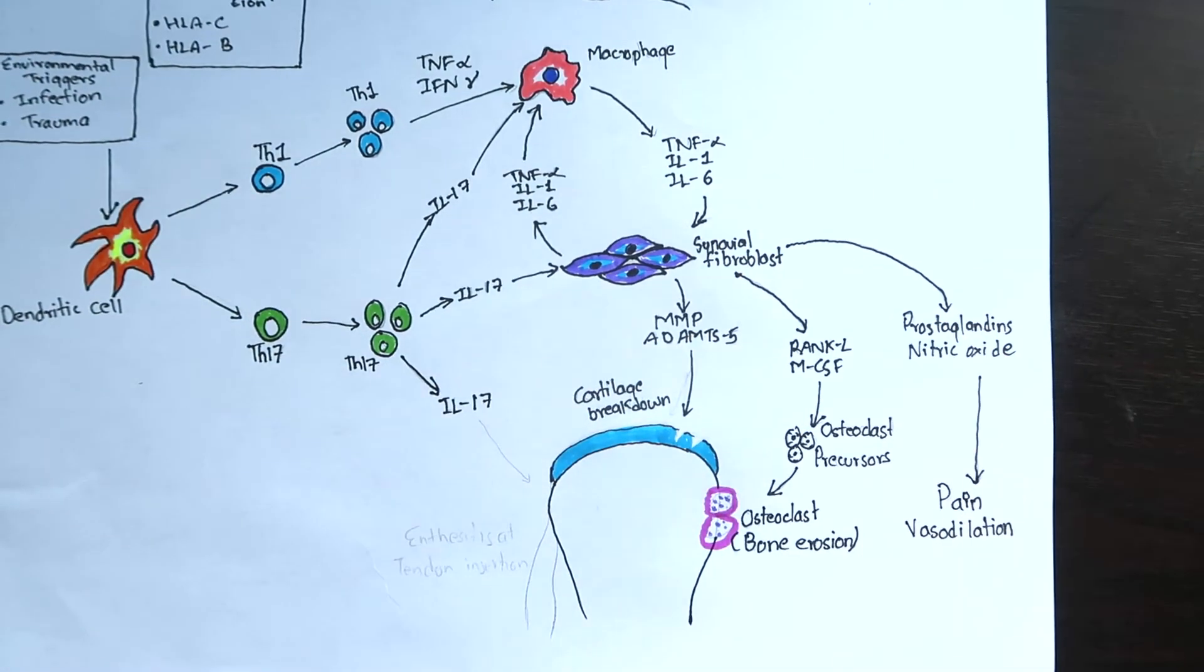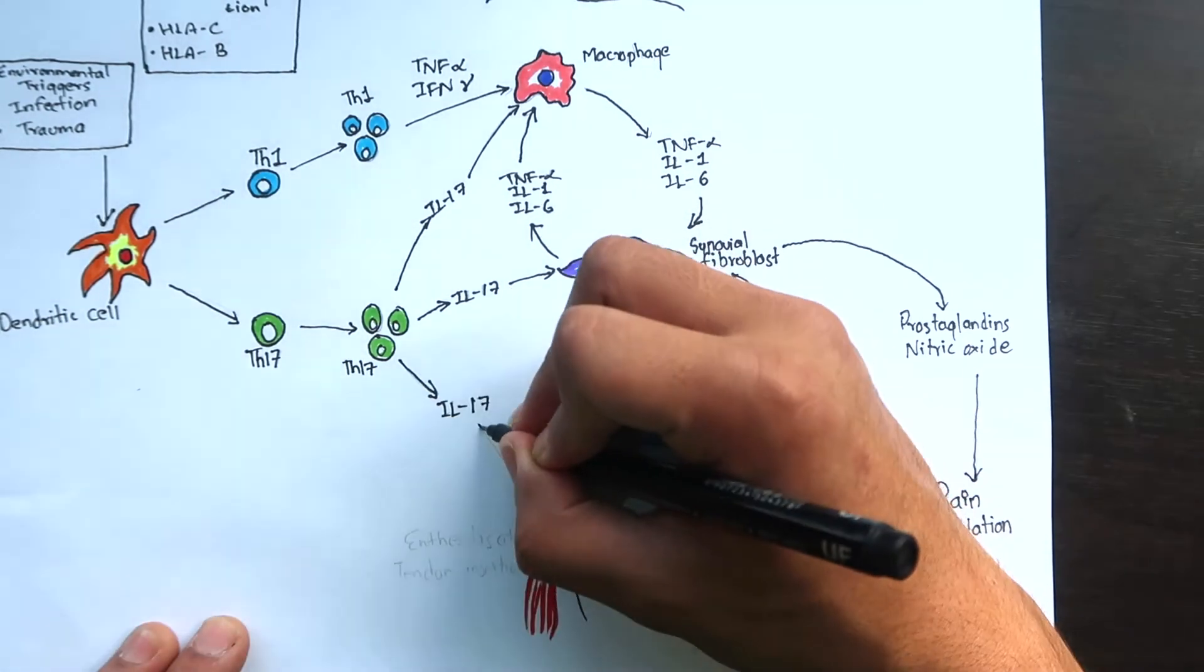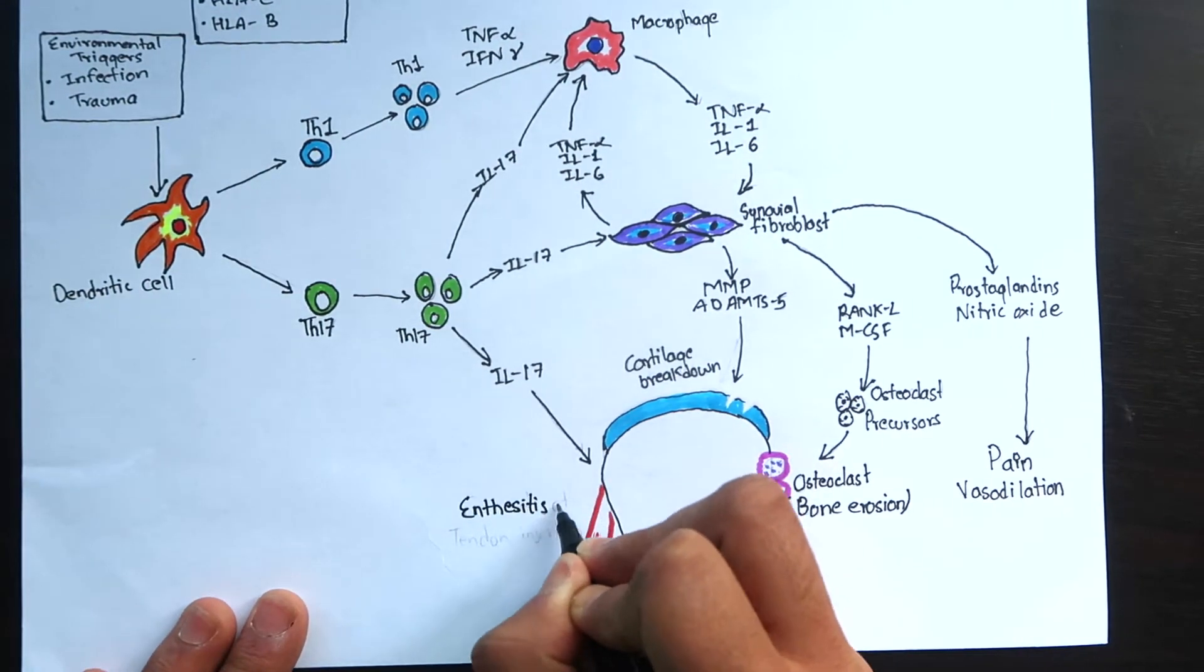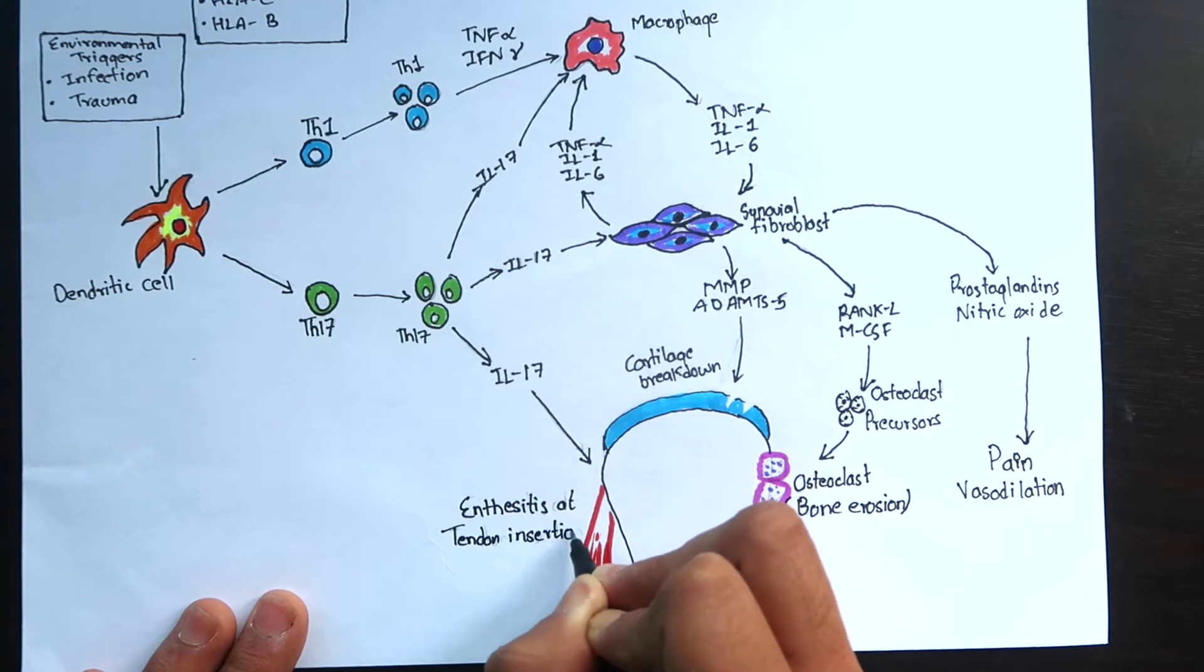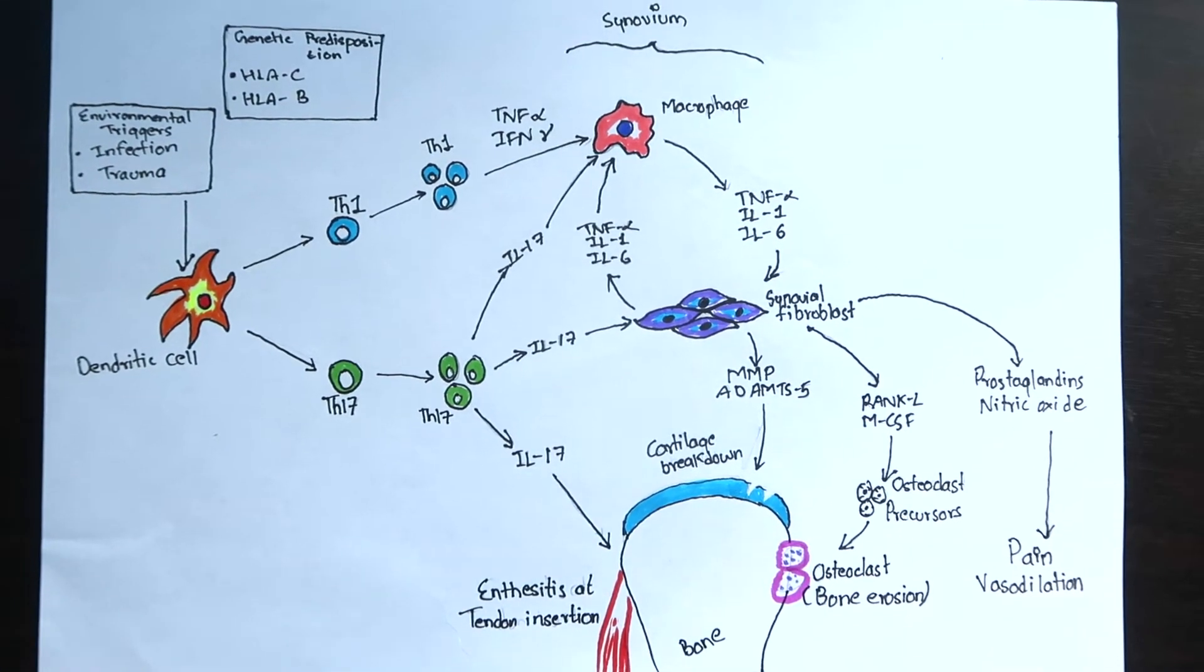Interleukin-17 produced by the T helper 17 cells can cause enthesitis, that is inflammation at the site where the tendon attaches with the bone. This is the overall pathogenesis of psoriatic arthritis.